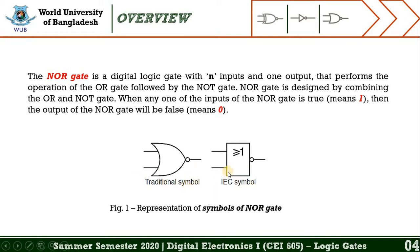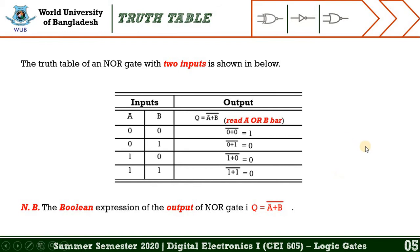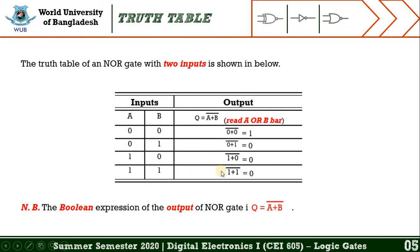From this slide you may learn the truth table of the NOR gate. This NOR gate has two inputs, one symbolized by the English alphabet A and another by B, and the output is symbolized by Q. For the inputs, we assign two binary values: zero and one. For these two binary values, we get four combinations: zero-zero, zero-one, one-zero, and one-one.